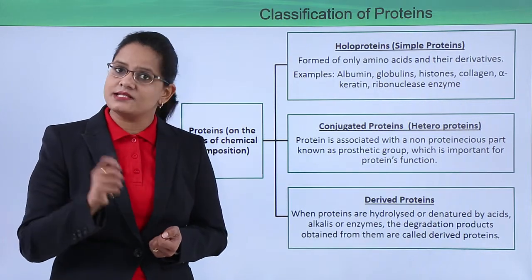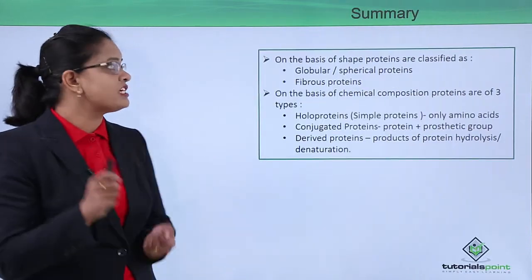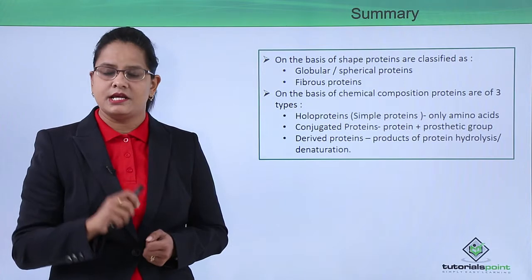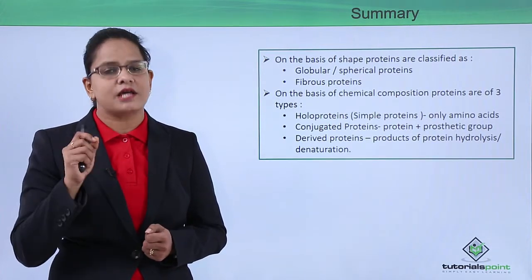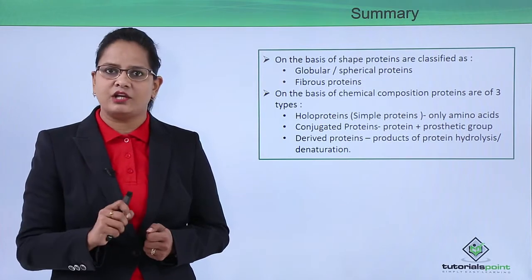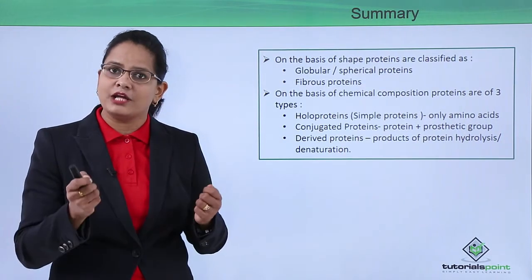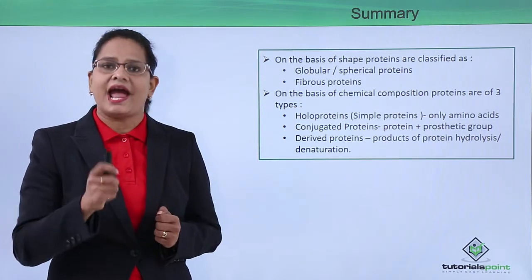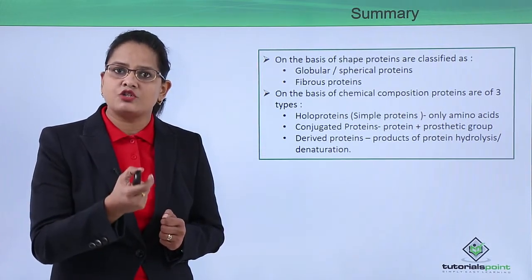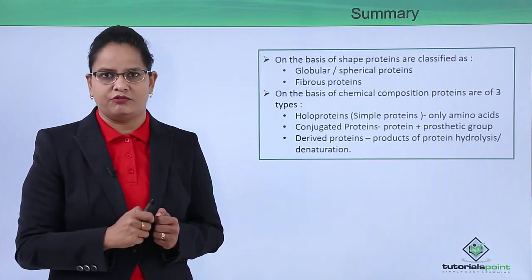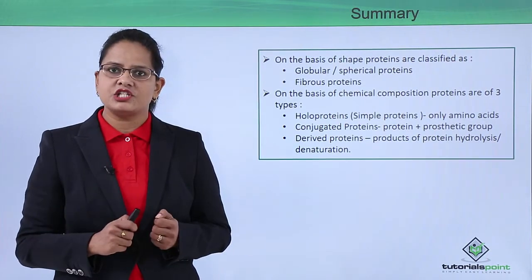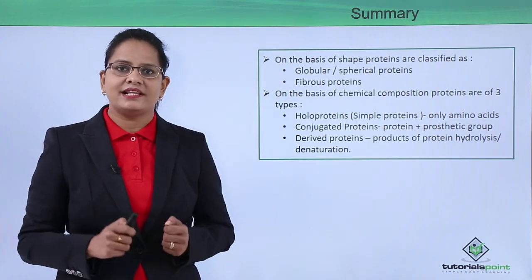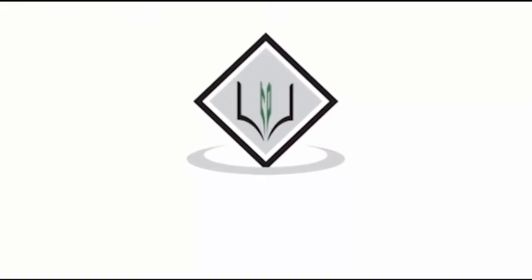To summarize: on the basis of shape, proteins are of two types — globular and fibrous. On the basis of chemical constituents, proteins are of three types — holoproteins (only amino acids), conjugated proteins (amino acids combined with an organic or inorganic group), and derived proteins (small parts formed by breaking or denaturing a protein). In the next video we will discuss conjugated and derived proteins in detail. Thank you — TutorialsPoint, simply easy learning.